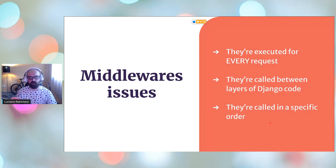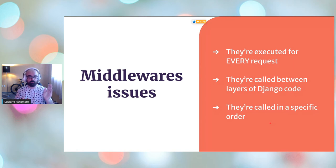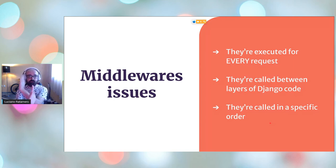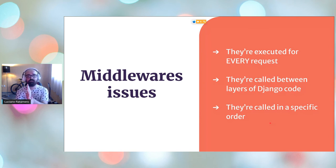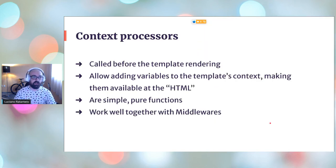Middlewares are called in a specific order, which people sometimes forget. They're listed in settings.py, and on the way in they're called from top to bottom. On the way out — the response — they're called from bottom to top. It's kind of weird. So you have the WSGI, you have the middlewares, you have the view, you do stuff in the view, then you hit the middlewares again on the way back.